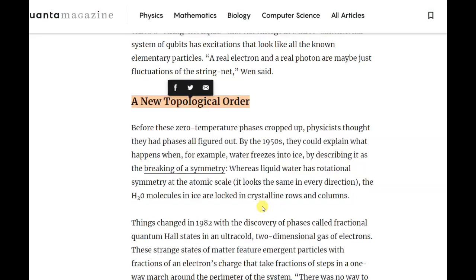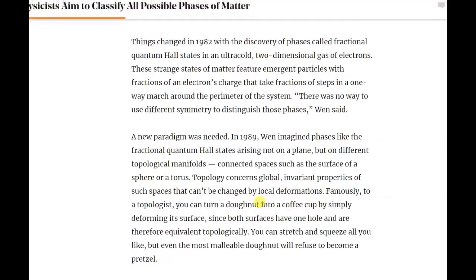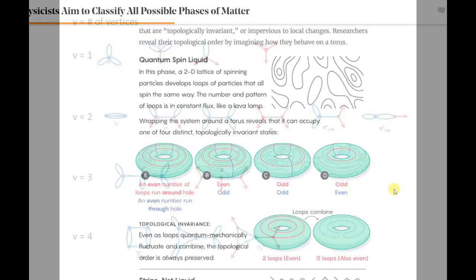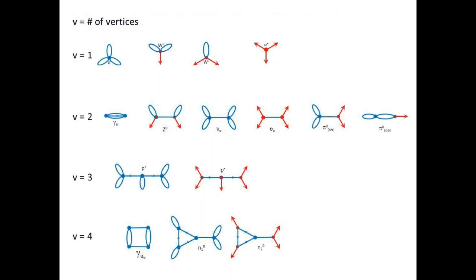What is needed, according to the scientists in the article, is a new topological order, which is, by the way, exactly what we are now claiming to have with Phoenix theory, in case you missed it.